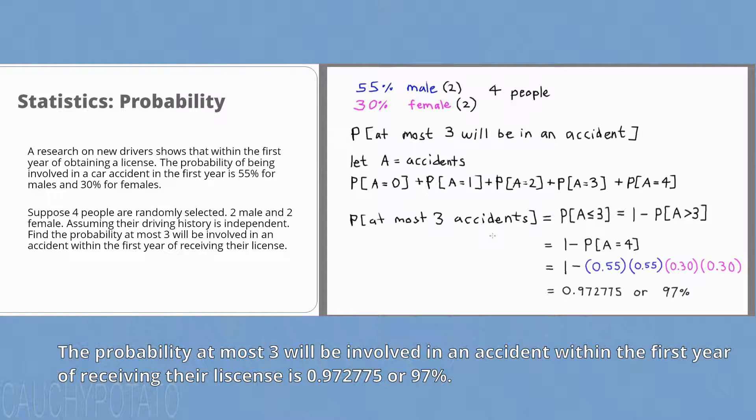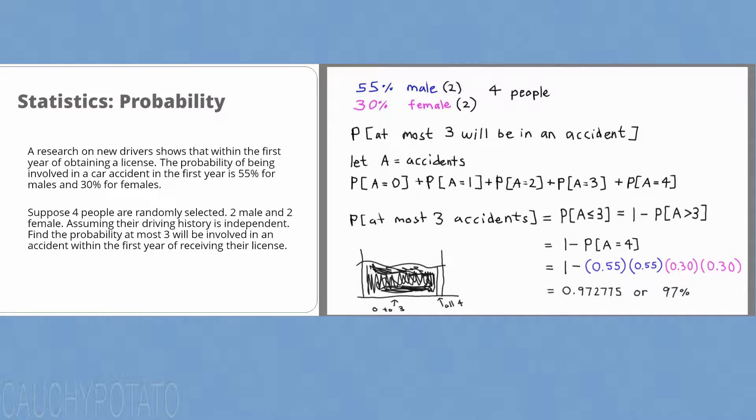Just so you can see it better. If this represents the entire set of probabilities, 0, 1, 2, 3, or 4 accidents happening, we are removing this little portion of all four happening and are left with the stuff here, which is 0 to 3 accidents happening. The probability at most three will be in an accident, which is what we want. And that's it. Hope this video helps. Thanks for watching.